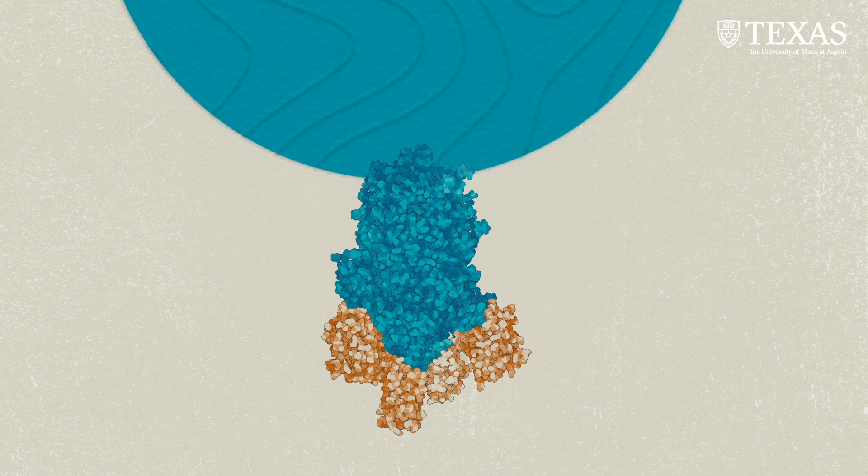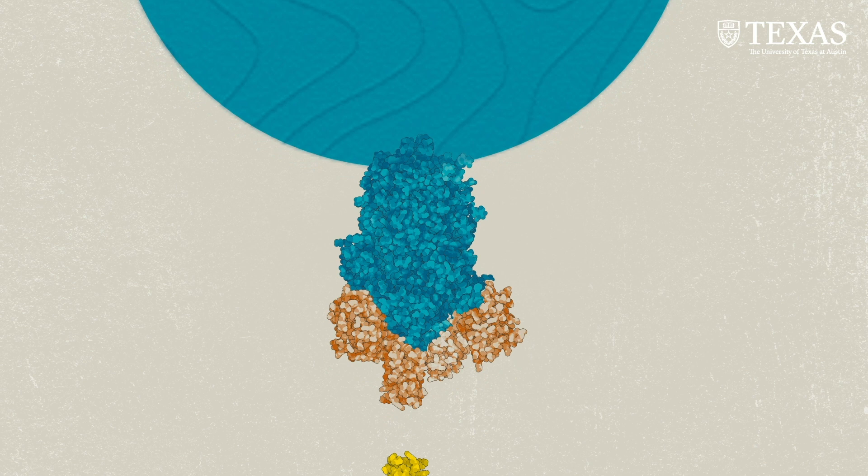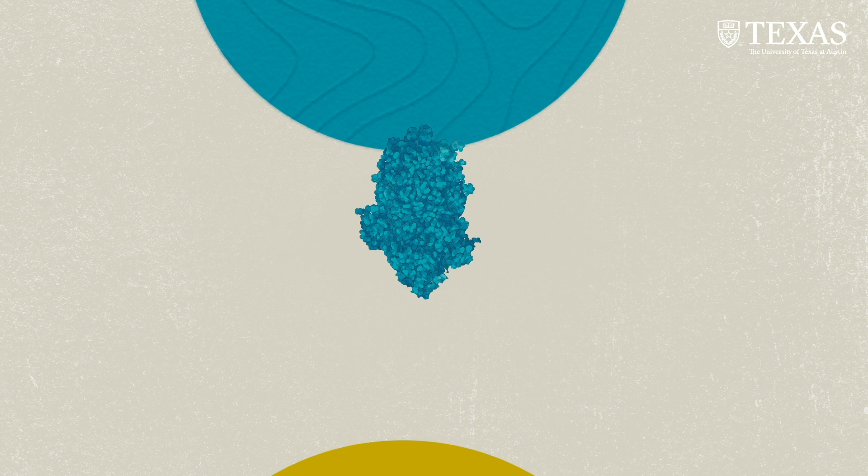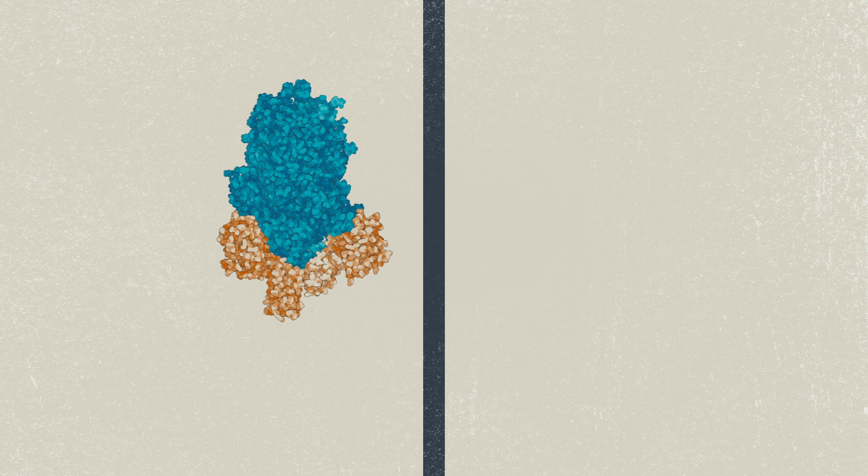To do so, the spike protein shapeshifts. In order for the coronavirus to infect cells, the spike proteins which decorate the surface have to undergo a shape change. They start off in a shape that reminds me of a mushroom. It has a cap and a stalk. It then binds the receptors via the cap. The cap then falls off and the stalk elongates and shoots into the host cell membrane.